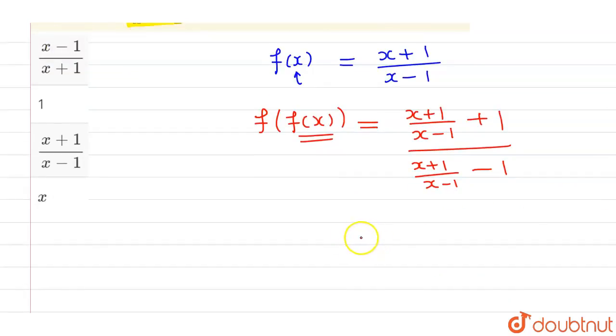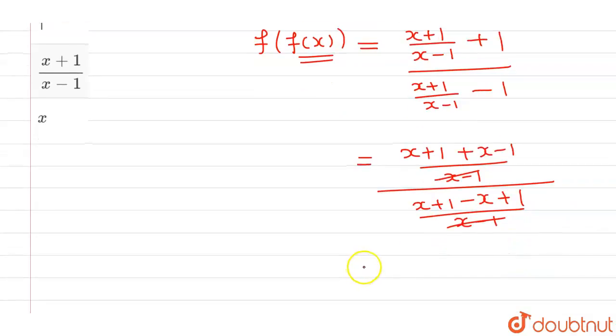Now if you try to solve this, then you will be getting x plus 1 plus x minus 1, wholly divided by x minus 1, divided by x plus 1 minus x plus 1 divided by x minus 1. Now this x minus 1 will cancel out and overall I will be getting 2x divided by 2, which means x.